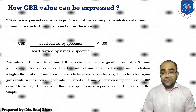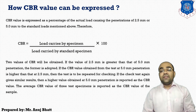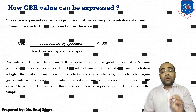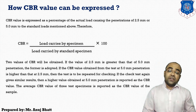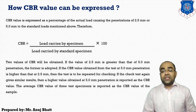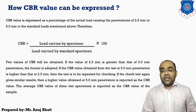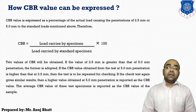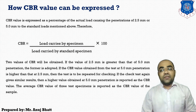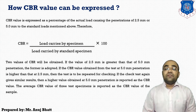Two CBR values are obtained — one at 2.5 mm and one at 5 mm penetration. If the value at 2.5 mm is greater than at 5 mm, the 2.5 mm value is adopted. If the CBR value at 5 mm penetration is higher than at 2.5 mm, the test is repeated for verification. If the repeated test again gives a higher value at 5 mm, then that higher value is reported as the CBR value. The average CBR value of the three test specimens is reported as the final CBR value for that particular sample.